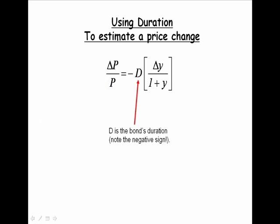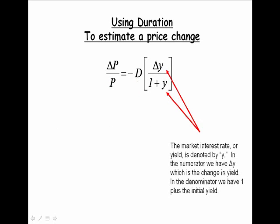In our formula, D is the bond's duration. Note the negative sign in front of duration. The market interest rate or yield is denoted by Y. So in the numerator, we've got delta Y, which is the change in yield. In the denominator, we have 1 plus our initial yield.